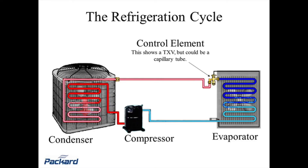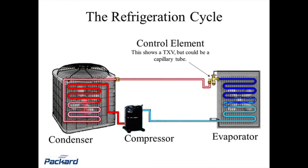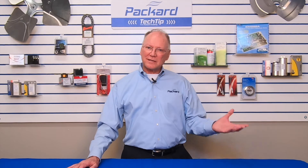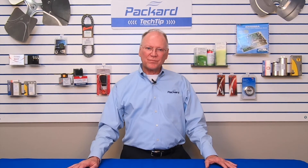Looking at this slide, it shows those four major components in the system. It doesn't matter whether it's a refrigeration system or an air conditioning system — these components are present. We can see the condensing coil inside the condensing unit.